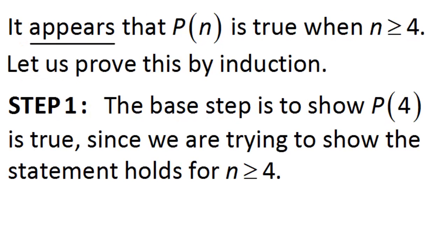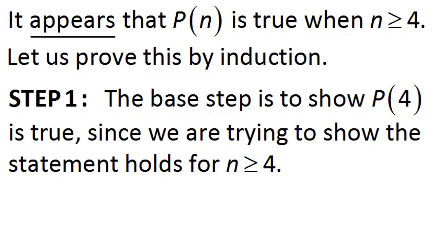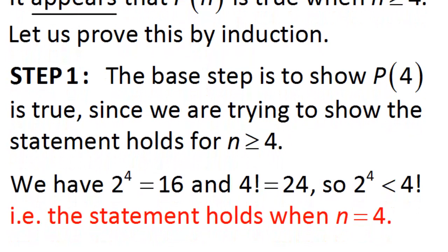To start off we have the base step. In this case the base step is to show the statement holds when n equals 4, because we're not trying to show our statement is true for all natural numbers — we're only trying to show it's true when n is greater than or equal to 4. We already checked this earlier, so we know the statement holds when n equals 4, and so that's the base step done.